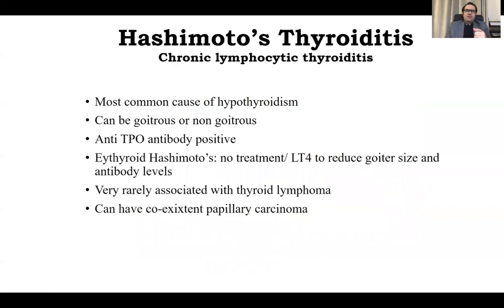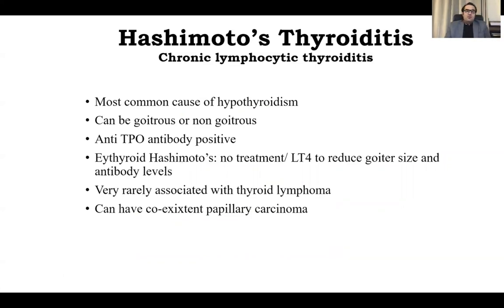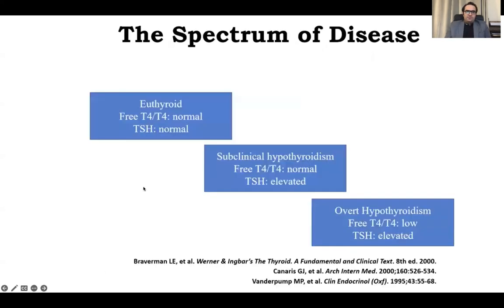Hashimoto's thyroiditis is chronic lymphocytic thyroiditis — the most common cause in the US, and can be goitrous or non-goitrous. Anti-TPO antibody is positive in most cases. If the patient has euthyroid Hashimoto's — antibody positive but T4 is normal — there is no treatment. You should not treat goiter size or antibody levels with thyroxine until the patient develops subclinical hypothyroidism or symptoms. The spectrum goes from euthyroid with normal free T4 and TSH, to subclinical with normal free T4 but mildly elevated TSH, to overt with low free T4 and elevated TSH.